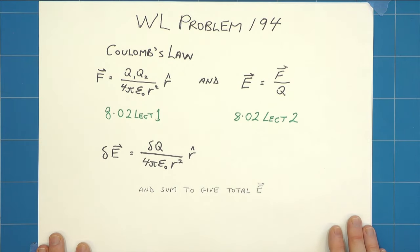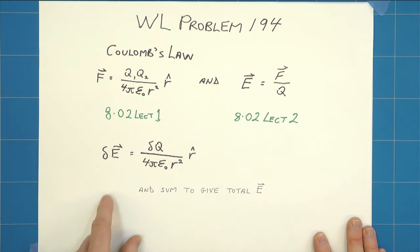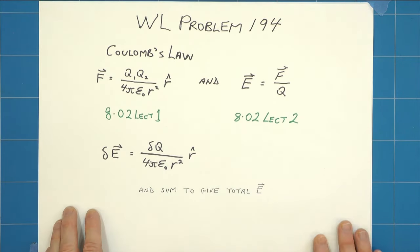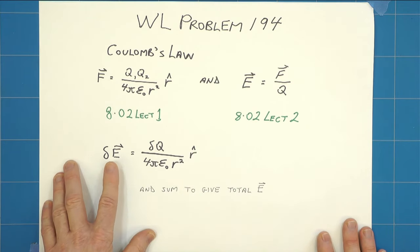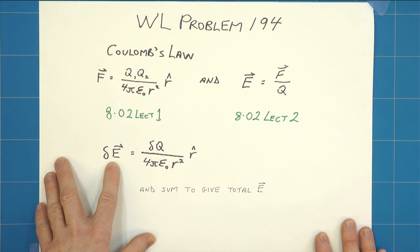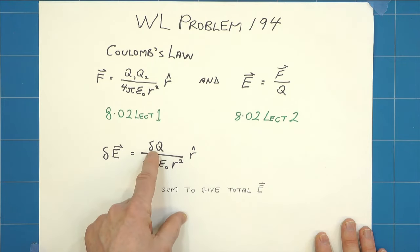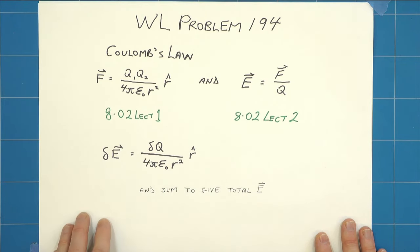lecture 2 of 802. From that we can produce this formula here which tells us that an element, an elemental part of the electric field at some point a distance r from an element delta q, has this form here.